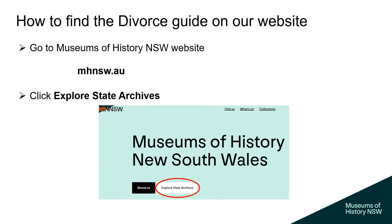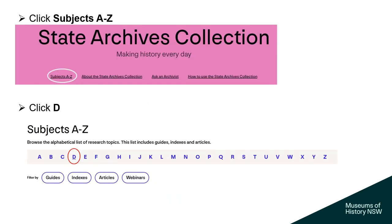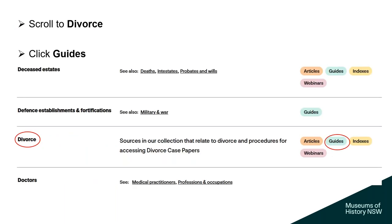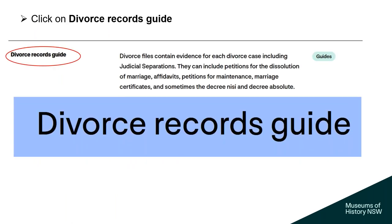To find the divorce guide on our website, go to the Museums of History New South Wales website, mhnsw.au, click on Explore State Archives, click Subjects A to Z, click on D and scroll down to Divorce, click on the Guides to the right-hand side, and then click on the Divorce Records Guide and you'll find all the information about the records we hold within our collection.